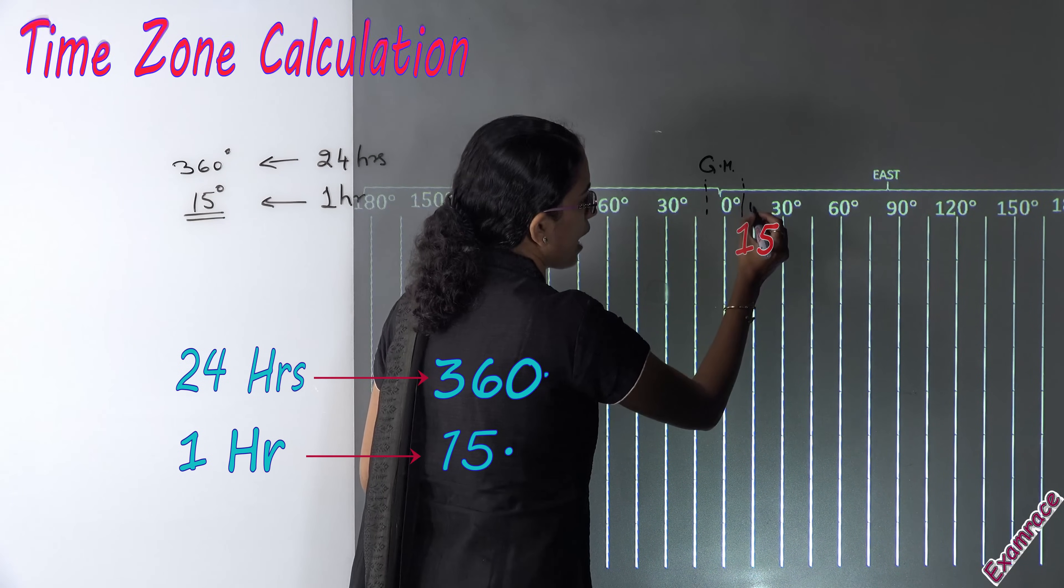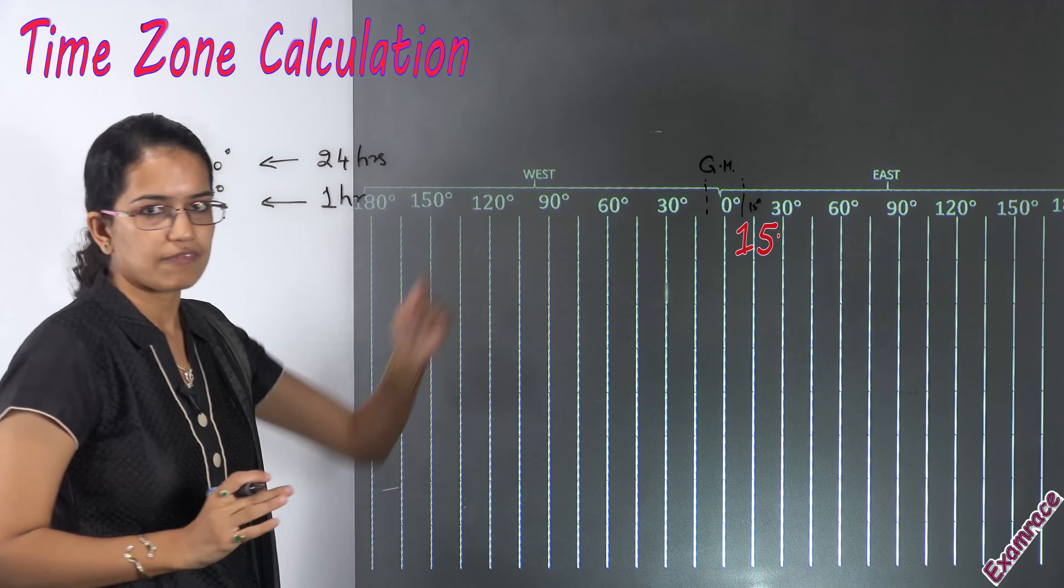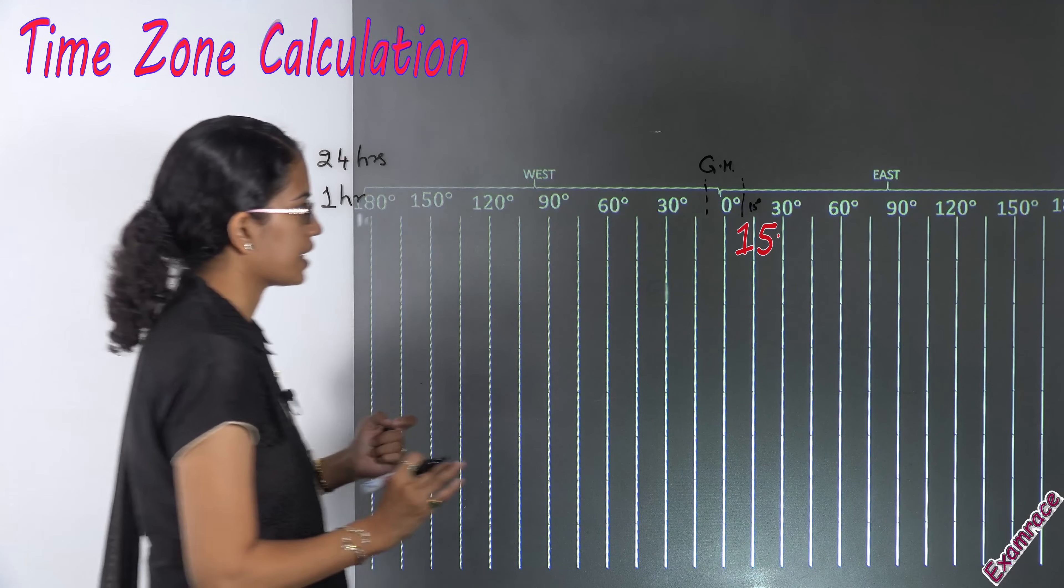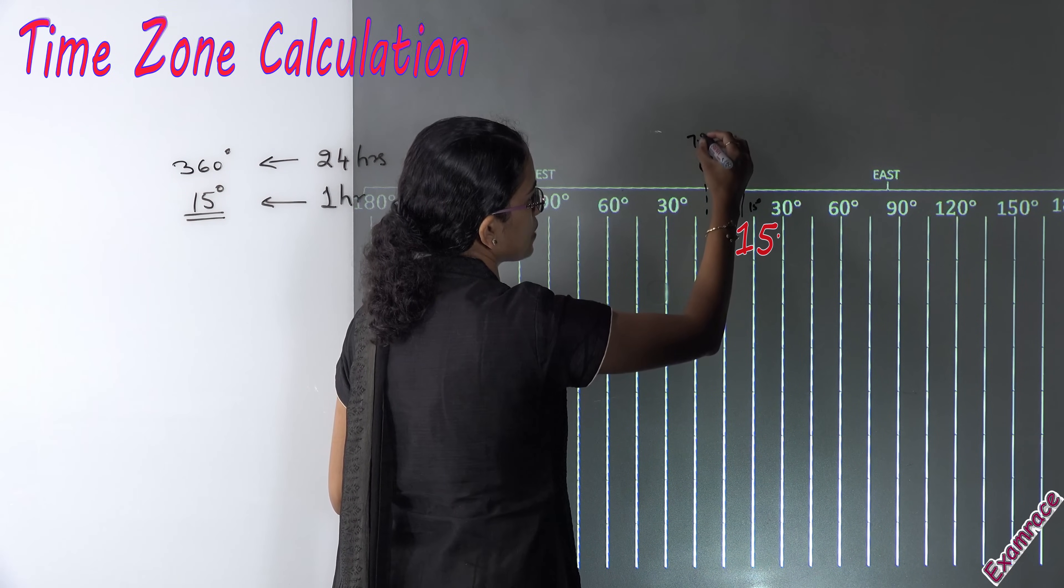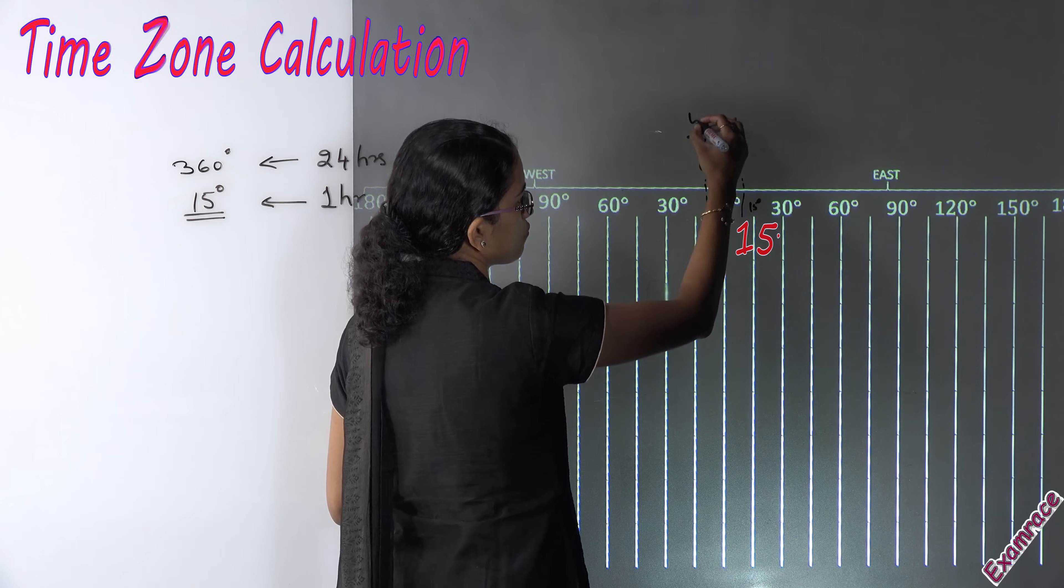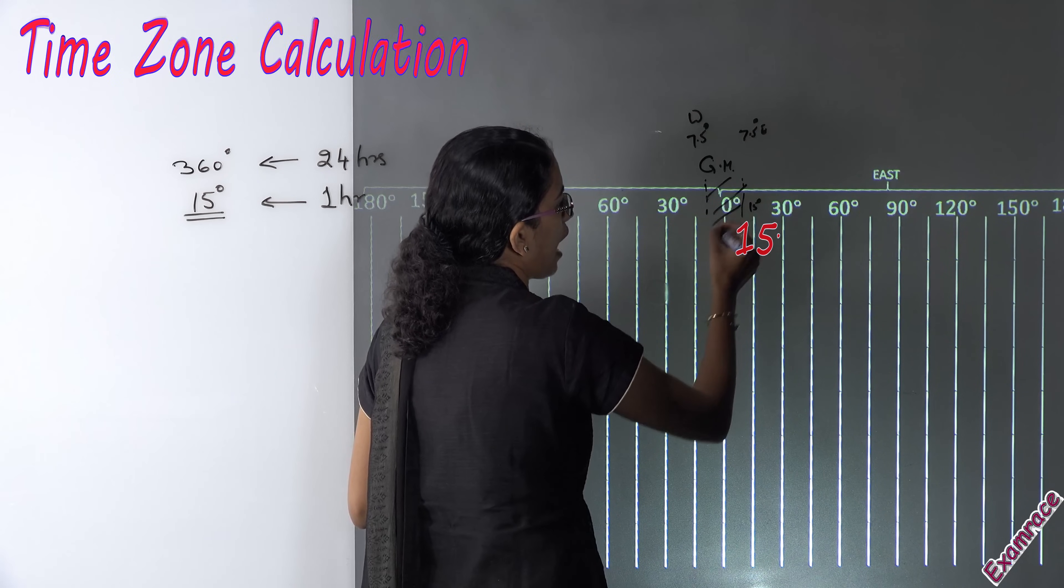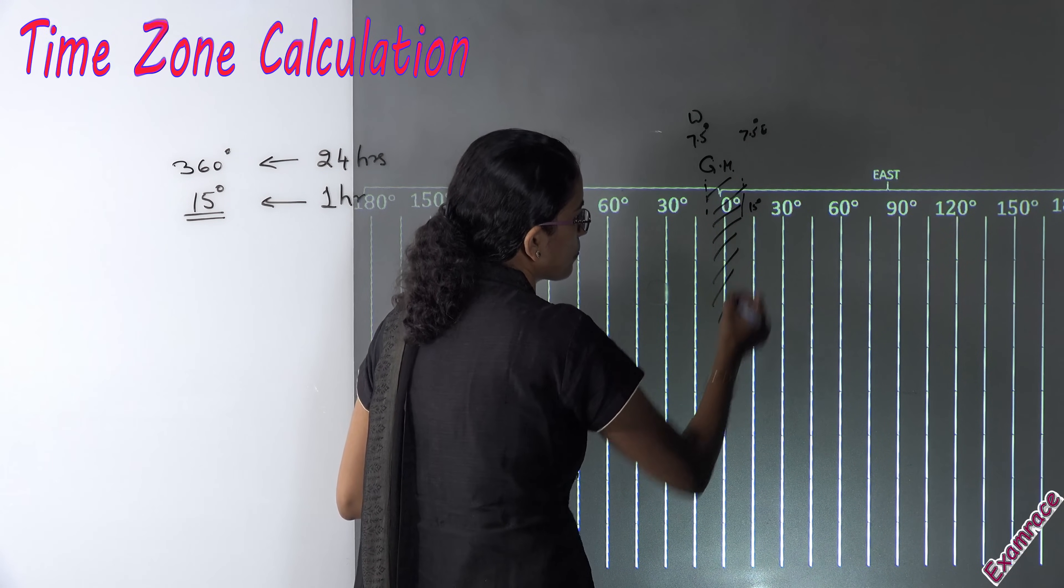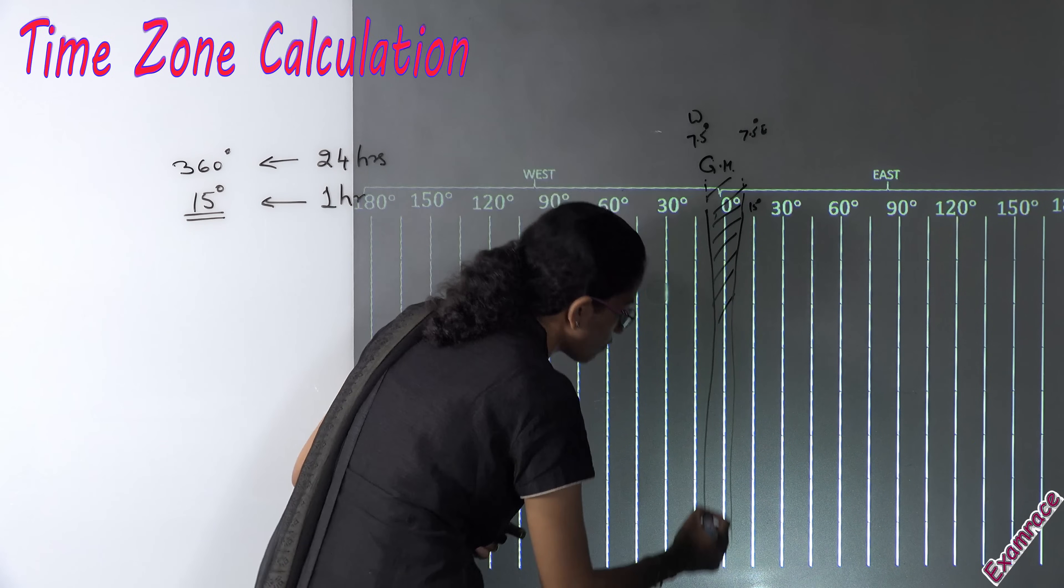So we have 0 degree then we have 15 degree, 30 degree. With every alternate line we have marked the values to make it simplified. Now for this 0 degree, anything that lies between 7.5 degrees west and 7.5 degrees east would have a same time zone.